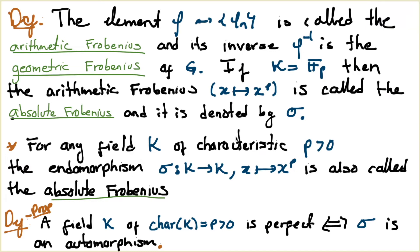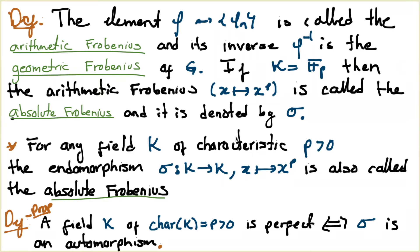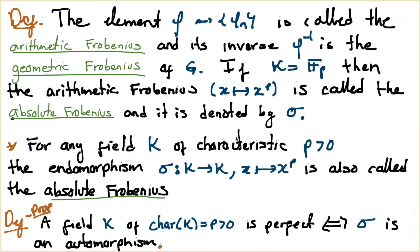So for a field of positive characteristic, perfectness is equivalent to the Frobenius being an automorphism. I think this is a good time to take a small break — ten minutes.